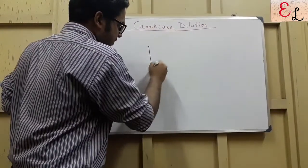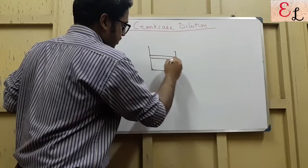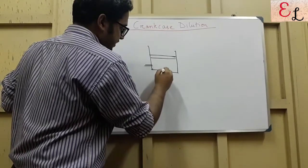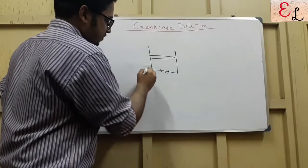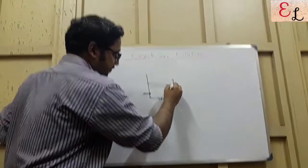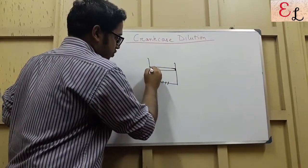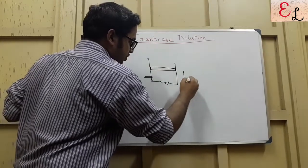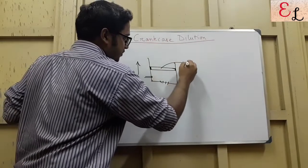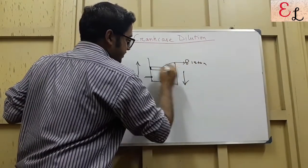So first, let's draw a schematic. For simplification, we are drawing it like this. It's a much more complex and different structure altogether. We have already shown the structure in the earlier video. You can always refer to that. So, considering this is the downstroke, this is the upstroke, this is the piston, and these are the gaskets.